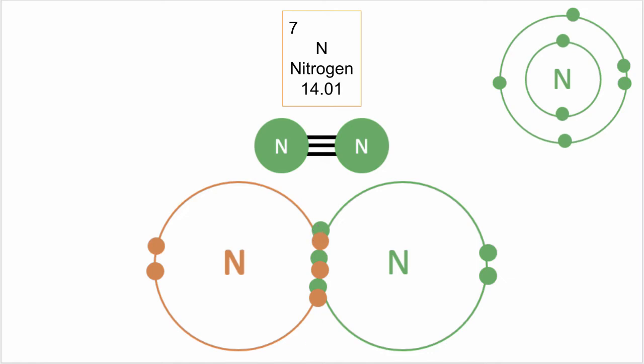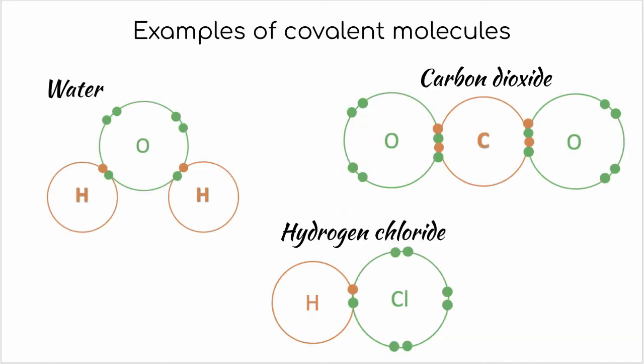Now the examples I've shown you have just happened to be all between like atoms like chlorine with chlorine and oxygen with oxygen but covalent bonds can form between any two non-metals. So here are some other examples. We've got hydrogen chloride or you might know that as hydrochloric acid. We've got carbon dioxide and a water molecule and you can see there that we've got the single covalent bonds and we can see the double covalent bonds in carbon dioxide quite clearly with this type of diagram.